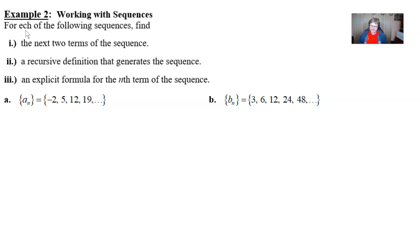So our example looks like this. It says for each of the following sequences, isn't it fun finding these little hidden easter eggs of misspelled words? For each of the following sequences, find these three things. Number one, the next two terms of the sequence. Number two, a recursive definition that generates the sequence. And number three, an explicit formula for the nth term. There's a lot going on there.